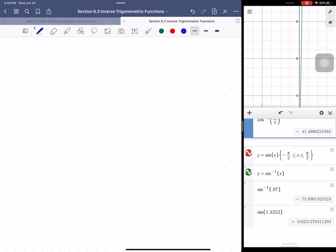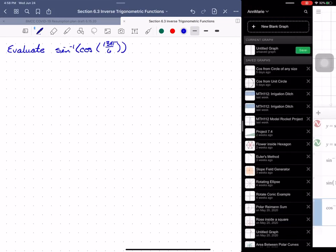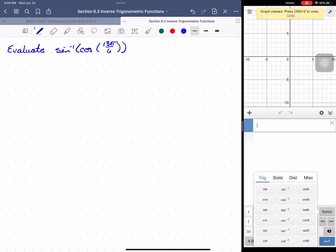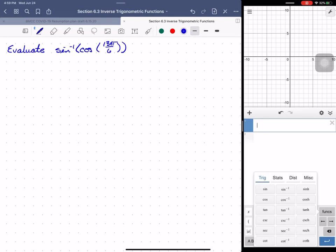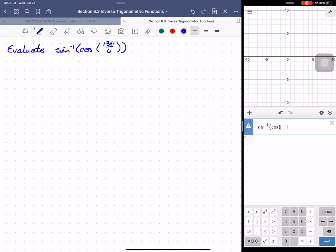But you need to know your unit circle, because suppose you're asked to evaluate the inverse sine of the cosine of 13 pi over 6, and you think, piece of cake. I'll go to Desmos, and I will just put myself in radians, because I recognize that as a radian measure, and I can type in the inverse sine of the cosine of 13 pi over 6, and you get 1.047, and you're going to get it wrong.